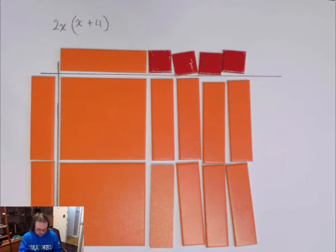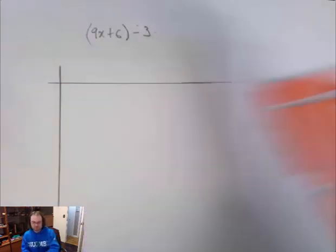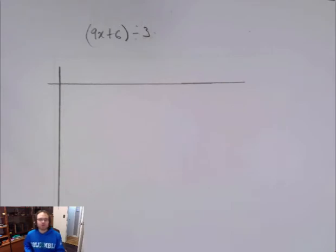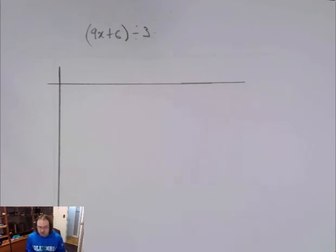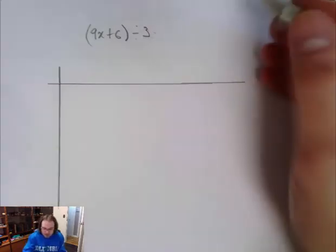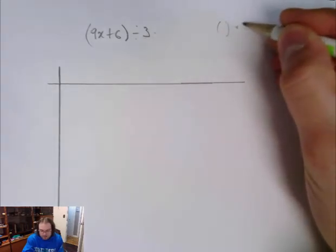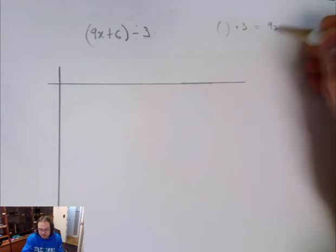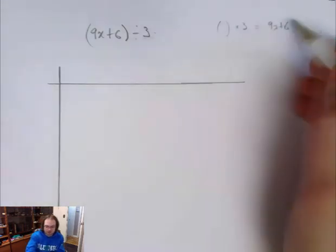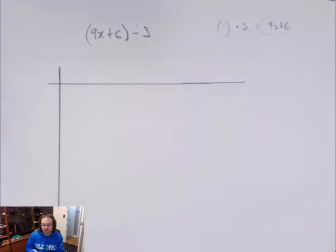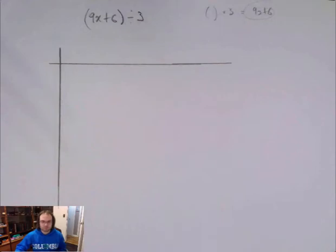So now let's try our first division one. Here I have 9x plus 6 divided by 3. I want to know what that equals or simplifies to. So, 9x plus 6 — in other words, remember how we said that when we did multiplication, I have something multiplied by 3 that is going to give me this 9x plus 6. This is the part we're dividing by, so this 9x plus 6 is going to have to go in there.